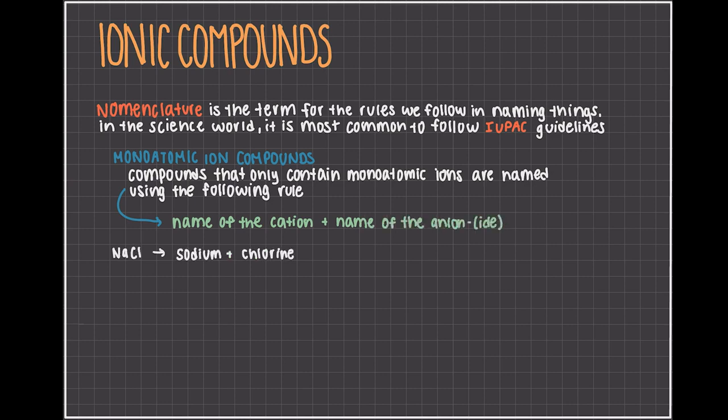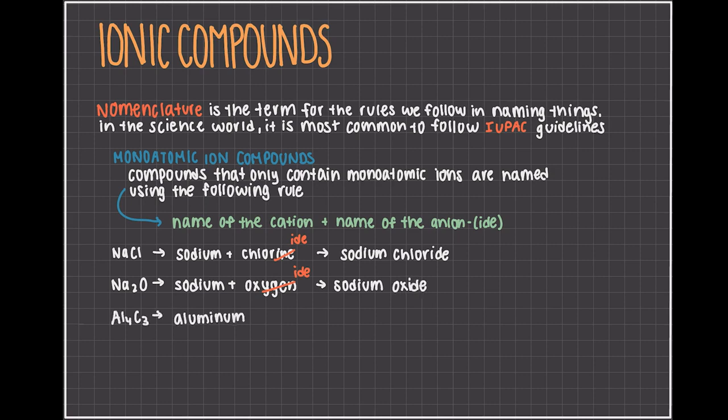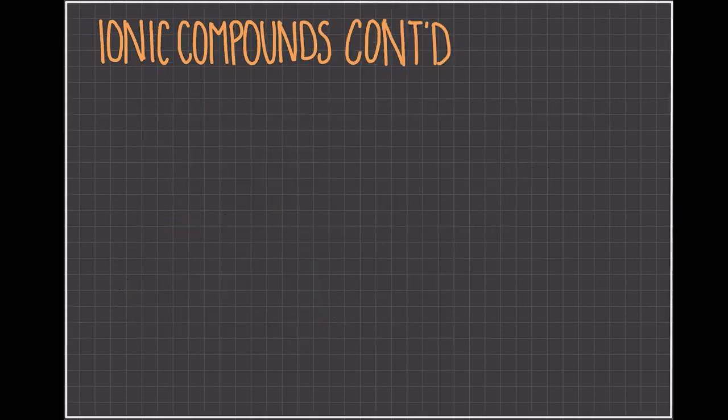NaCl is sodium and chlorine, but you replace the 'ene' with 'ide' to make it sodium chloride. Na2O is the same. It is sodium and oxygen, but you replace the 'ene' with 'ide' to make it sodium oxide. Al4C3 has aluminum and carbon, which then becomes aluminum carbide.